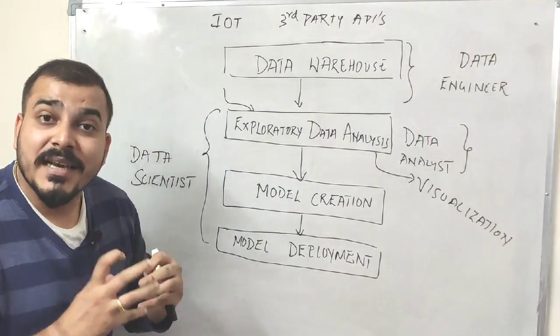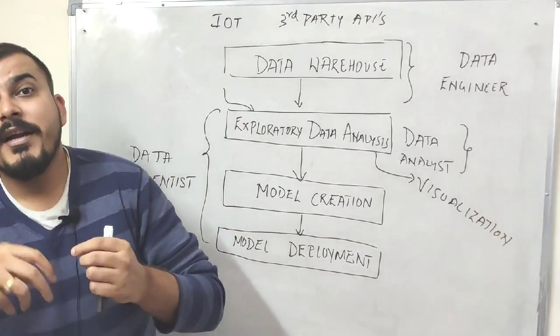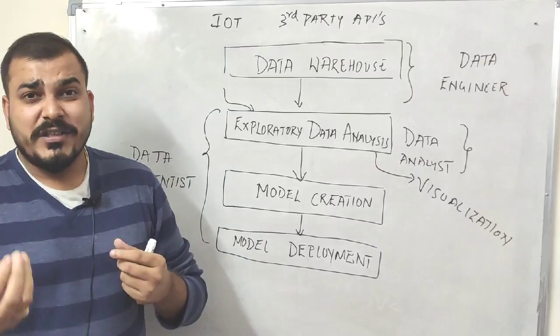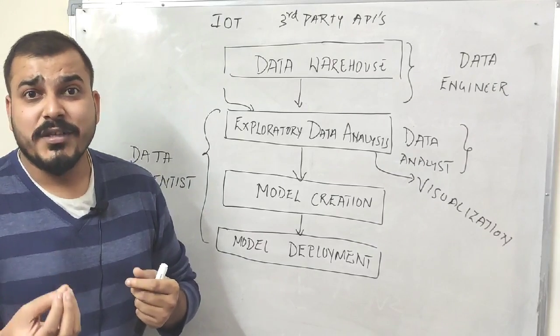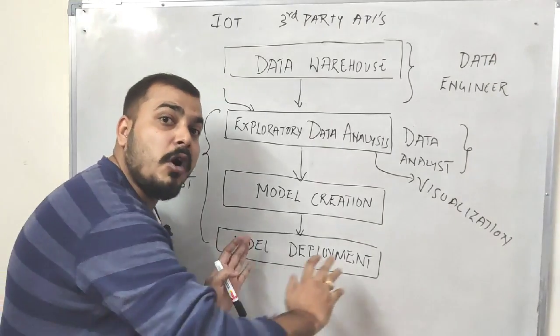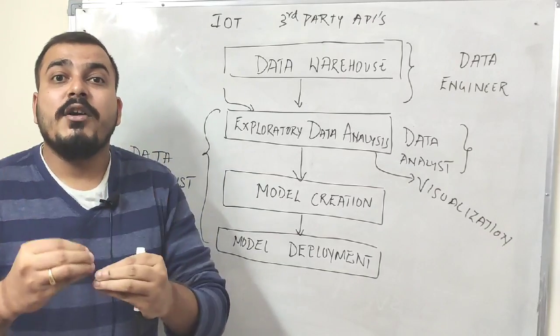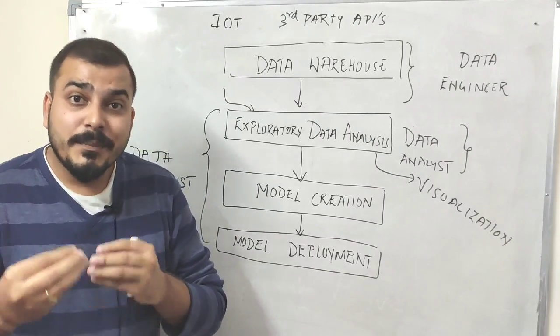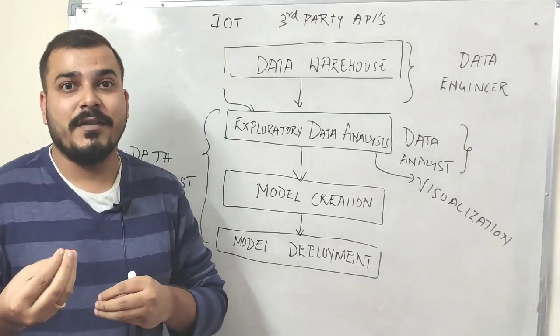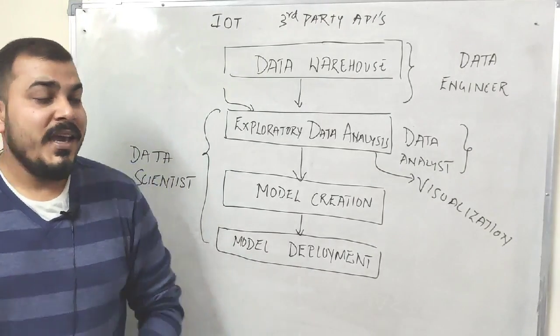The next step is model deployment, which is deployment to production and exposing a REST API to the front end user so they can use it. After this, there is model optimization, which means we are trying to increase the efficiency, performance, and accuracy of the model, and that is monitored time to time.